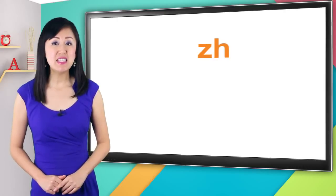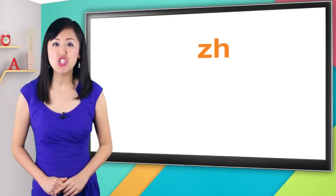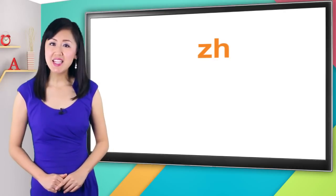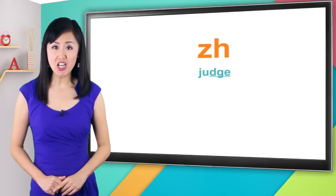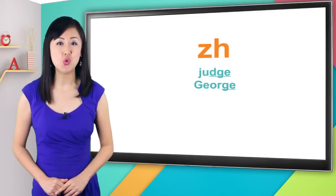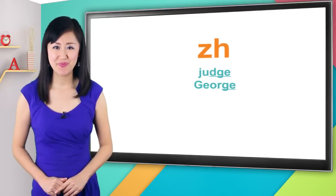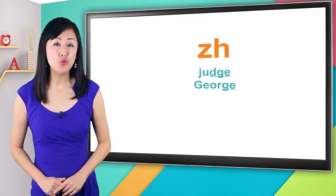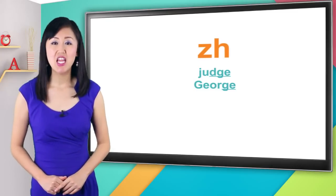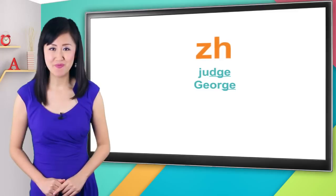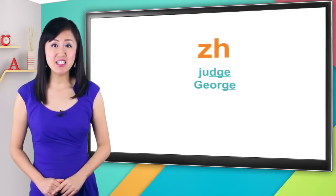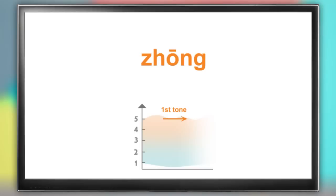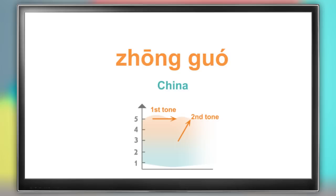The sound spelled zh in pinyin is zh. It's like the DGE in the word judge or the end of the name George. The tip of your tongue should be on the roof of your mouth as you say it. One word that contains this initial sound is zhong, as in zhong guo which means China.